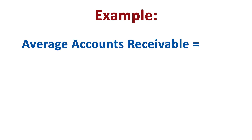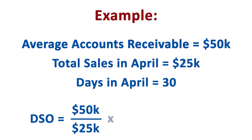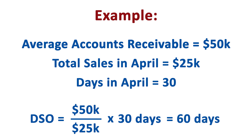A small car dealership looks at its accounts receivable over the month of April and works out that, on average, it's waiting to be paid $50,000. In April, they also made sales of $25,000. Therefore, the dealership has a Days Sales Outstanding of $50,000 divided by $25,000, multiplied by 30 days, which is, in the month of April, a DSO of 60 days.